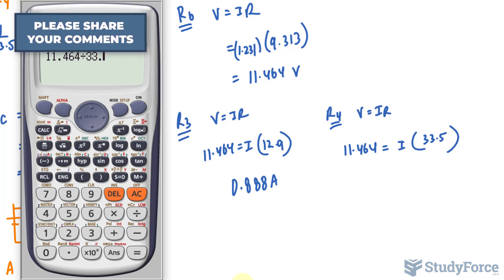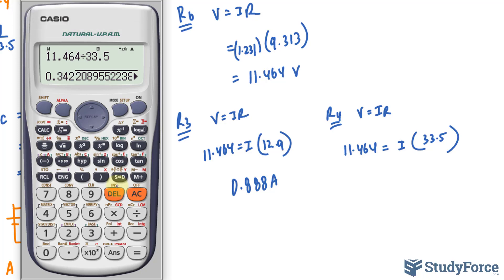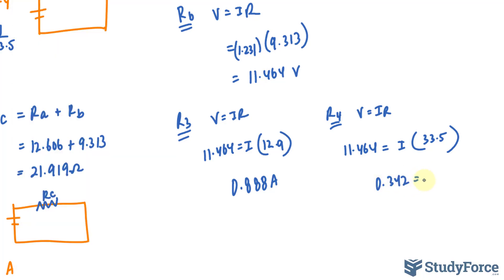And the current at R4, 11.464 divided by 33.5. And that makes 0.342. 0.342 is the current, and that's in amperes.